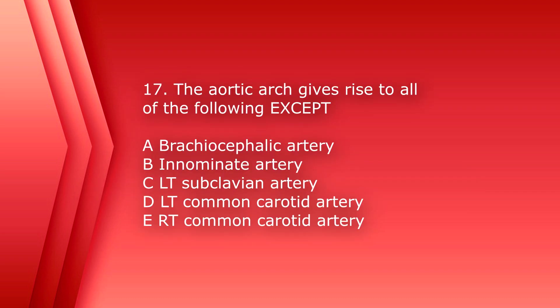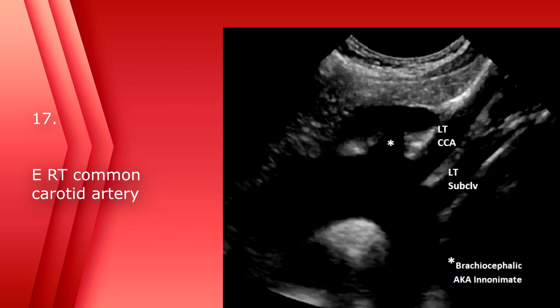Number 17. The aortic arch gives rise to all of the following except A, brachiocephalic artery, B, innominate artery, C, left subclavian artery, D, left common carotid artery, or E, right common carotid artery. So the normal aortic arch usually has the first artery is the brachiocephalic, followed by the left common carotid, then followed by the left subclavian artery. So the answer is E, right common carotid artery is not a branch directly off of the aortic arch. It is a branch of the brachiocephalic artery, which bifurcates into right common carotid and right subclavian.